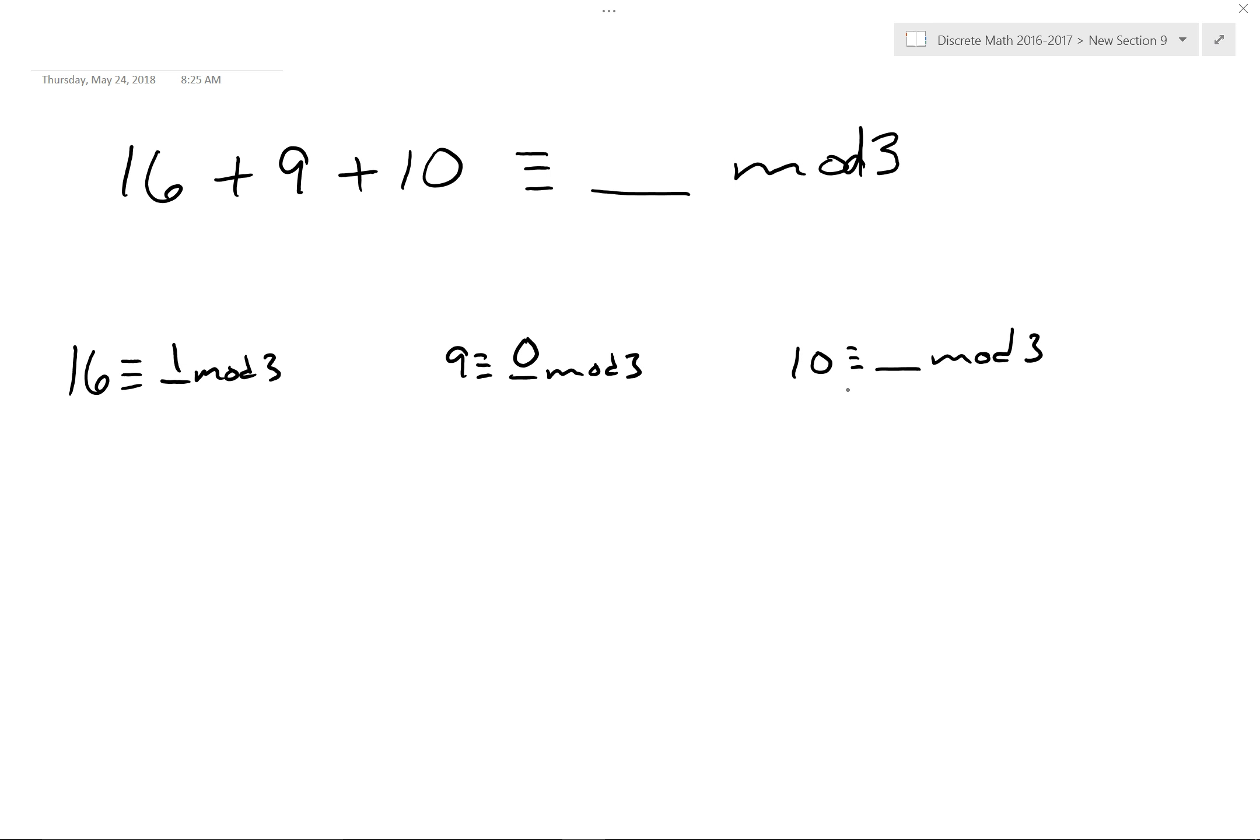And then, 3 goes into 10, 3 times, that's 9, 10 minus 9 is 1, 1 remainder. So, 1 plus 0 plus 1 is 2. Now, what do we call 2? What do we call 2 in mod 3?